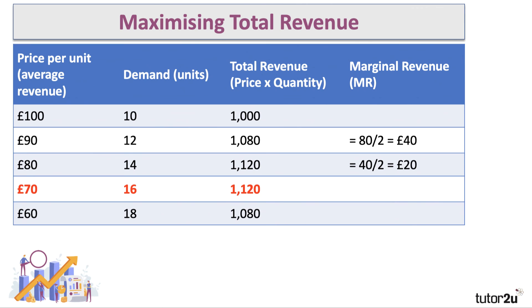Here's the key point: as long as marginal revenue is positive, if you cut the price your total revenue will go up. But notice that when we cut the price from 80 to 70, yes we sell two extra units, but our revenue stays the same — so you maximize your revenue when marginal revenue is zero. And if you were to cut the price again by ten pounds to 60, you'd sell two extra units but revenue would go down by 40 pounds — a marginal revenue of minus 20.